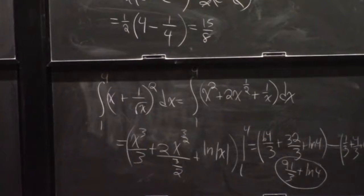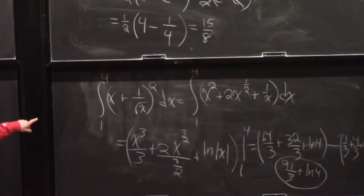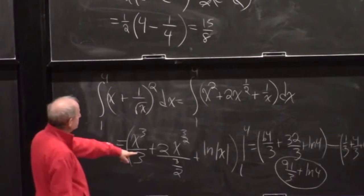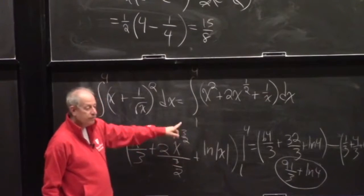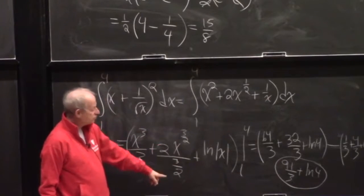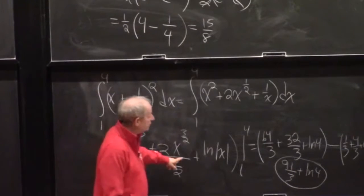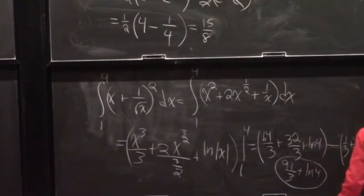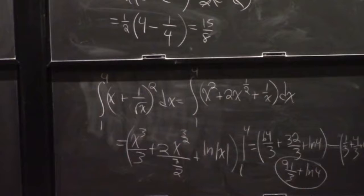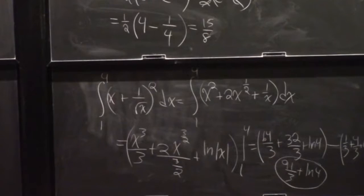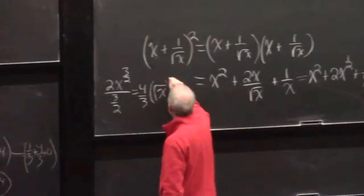So we get 91/3 plus ln 4. You just FOIL it out, take the integrals of the pieces — slightly annoying but not too bad. Remember, dividing by 3/2 is like multiplying by 2/3, so 2x to the 3/2 over (3/2) is 4/3, and x to the 3/2 is the square root of x cubed.